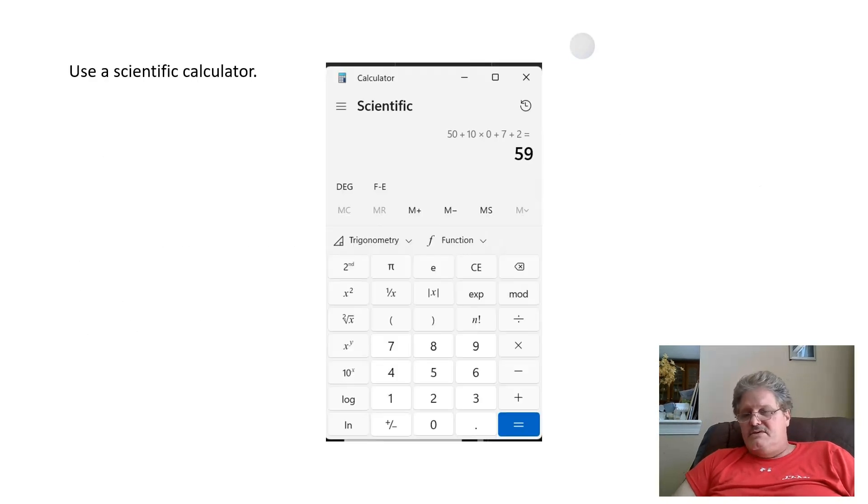You can use a scientific calculator. Almost everybody that has an Android phone—I don't have an iPhone—but most of your Android phones default for scientific mode, and you'll get 59.